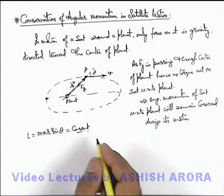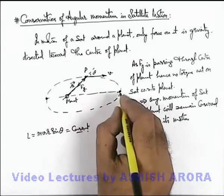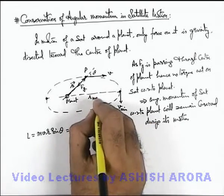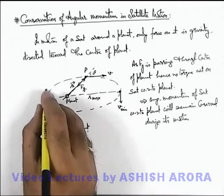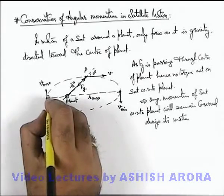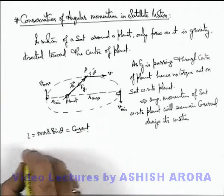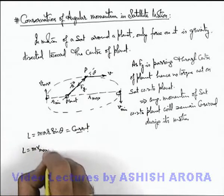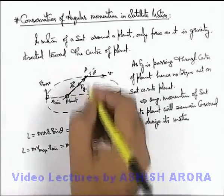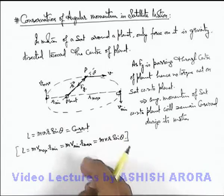The magnitude of angular momentum is constant. When the satellite is at the farthest point from the planet, its speed is minimum since r is maximum; at the closest point its speed is maximum and r is minimum. At the closest and farthest points, the angle between the position vector and velocity vector is 90°. By conservation of angular momentum: mv_max · r_min = mv_min · r_max = mvr sinθ. This equation represents conservation of angular momentum for the satellite revolving around the planet.